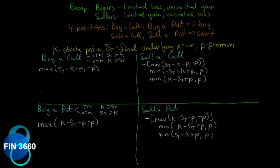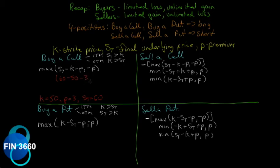Let's try an example: strike price K = 50, premium P = 3, and final underlying price S_t = 60 for buying a call. The payoff is max(60 − 50 − 3, −3) = max(7, −3) = 7. That makes sense — the underlying price is higher than our strike price, so we make money. The maximum of 7 and negative 3 is clearly 7.